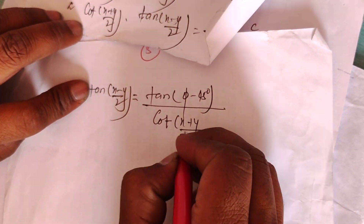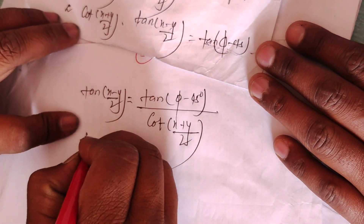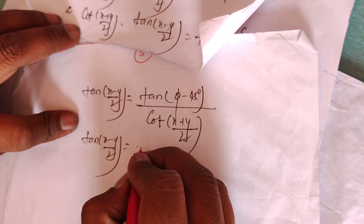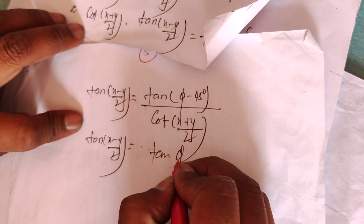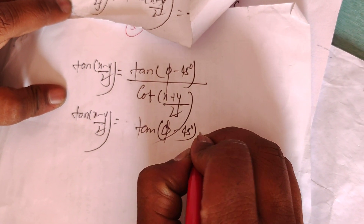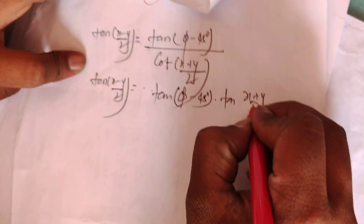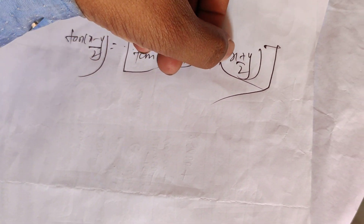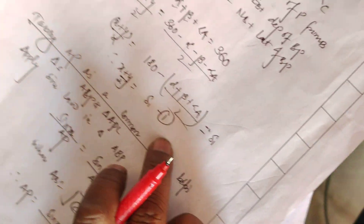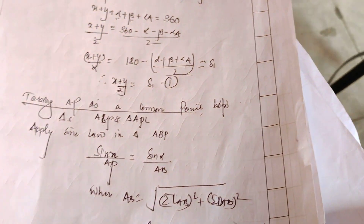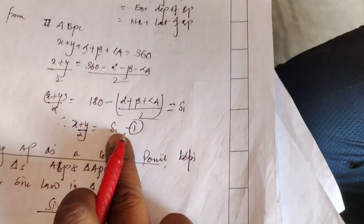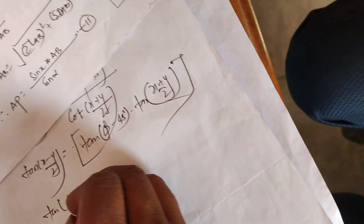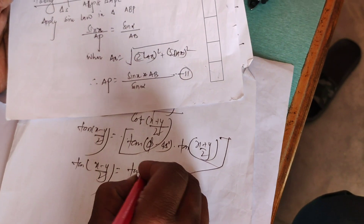It's cos(x+y)/2. Therefore, tan(x minus y)/2 is equal to tan(phi minus 45) times tan(delta 1). We don't know this value; we can add delta 1. Therefore the term is: tan(x minus y)/2 is equal to tan(phi minus 45) times tan(delta 1).